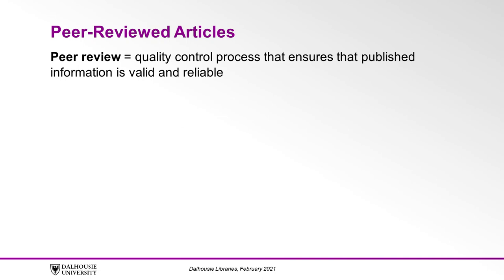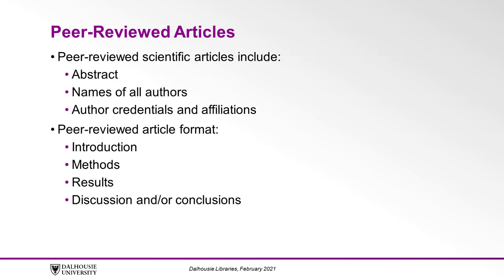Many of your assignments require that you use peer-reviewed articles. Peer review is a quality control process intended to ensure that published information is valid and reliable. Peer-reviewed scientific articles typically include an abstract and the names of all authors and their credentials and affiliations. Usually at least one author will have a doctoral degree such as a PhD or an MD and a university affiliation. The format of the article usually has sections for an introduction, methods, results, discussion, and/or conclusions.